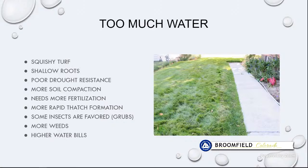Some examples of what too much water looks like: squishy turf is a big one. You'll see shallow roots, which means poor drought resistance — the minute those roots have to do some work, they'll go dormant. You'll need more fertilization. Too much water leads to more soil compaction, faster thatch formation, more weeds, certain bugs like it more, and of course higher water bills.